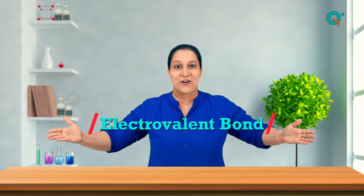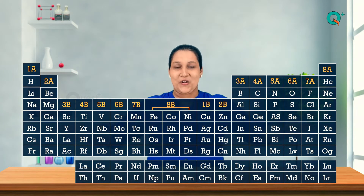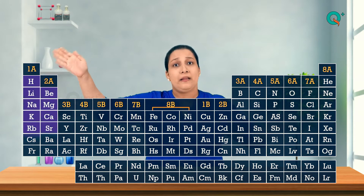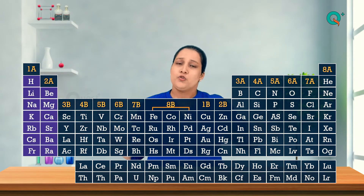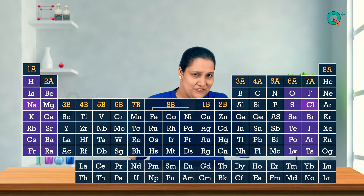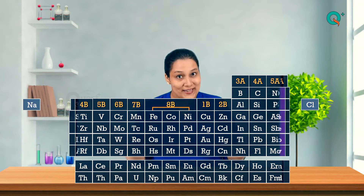Let's talk about the electrovalent bond. When there's a complete transfer of one or more valence electrons from an atom of an electropositive metallic element to an atom of an electronegative non-metallic element, we get the formation of an electrovalent bond. Let's add some salt to it — in its chemical form!